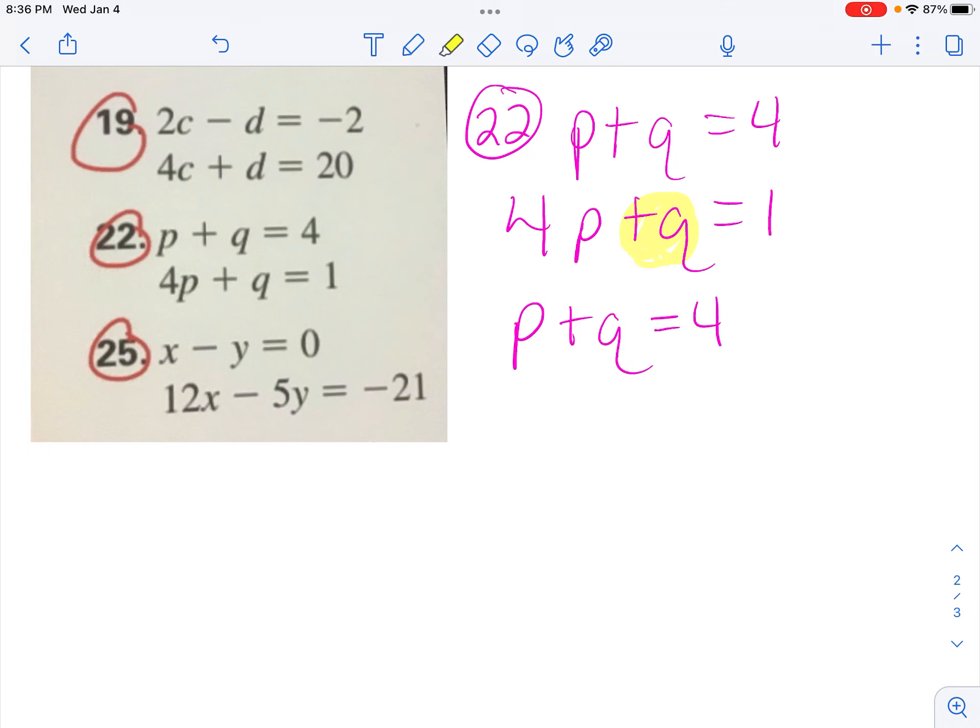So I'm going to come down here and I'm going to isolate the q. So I have to get p to the other side, and opposite operation of adding is subtracting. And these aren't like terms, so I'm not writing them right underneath each other. So I have q equals 4 minus p.